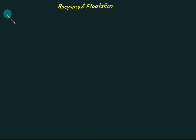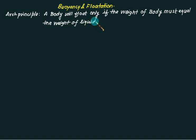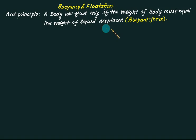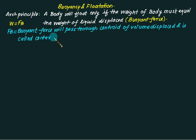This chapter on buoyancy and rotation is based on Archimedes' principle, which gives the relation between the weight of a body and the weight of liquid displaced. It states that a body will float only if the weight of the body equals the weight of the liquid displaced. The weight of the liquid displaced is also called the buoyant force, which passes through the centroid of the displaced volume — known as the center of buoyancy. By Archimedes' principle, weight always equals buoyant force, where Fb denotes the buoyant force.